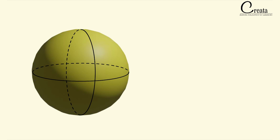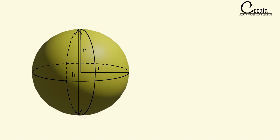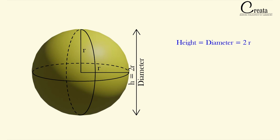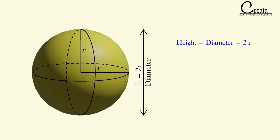Let's discuss the dimensions of the sphere. The sphere has only one dimension, that is the radius, which is denoted as small r. The center of the sphere is equidistant from all the points on the surface, and this distance is the radius. If we talk about the height of the sphere, that is this distance, it will be the diameter of the sphere, which is equal to twice the radius. So basically there is no height for the sphere — just the radius. But if the question asks for the height of the sphere, it is basically the diameter, which is twice the radius.